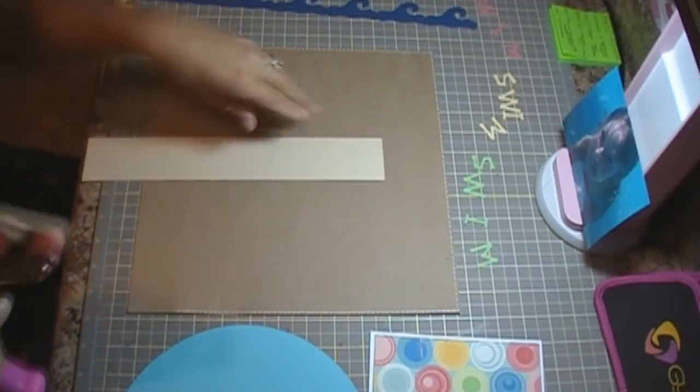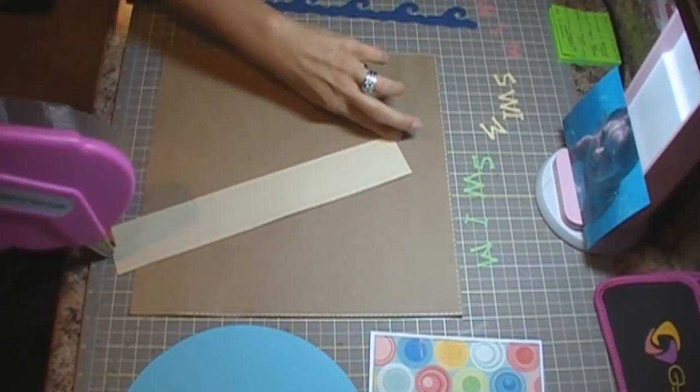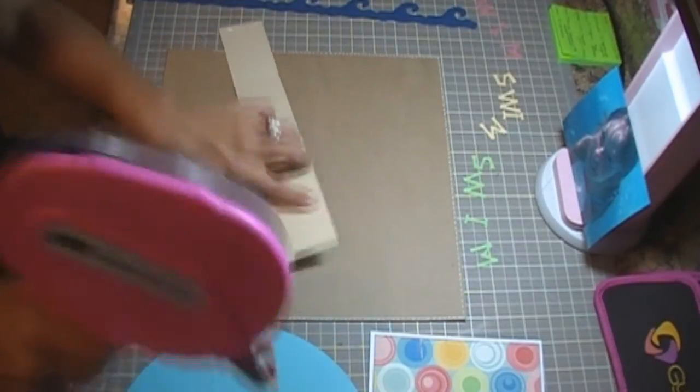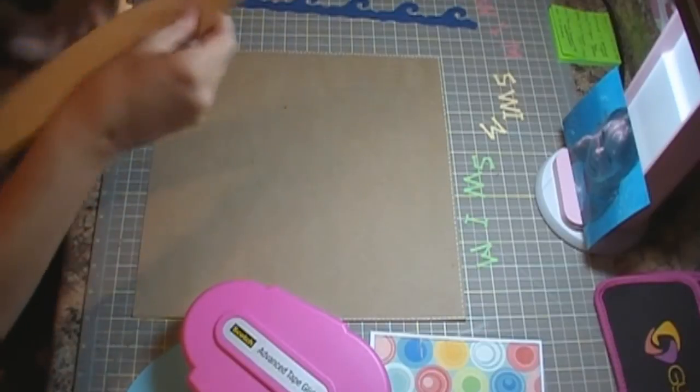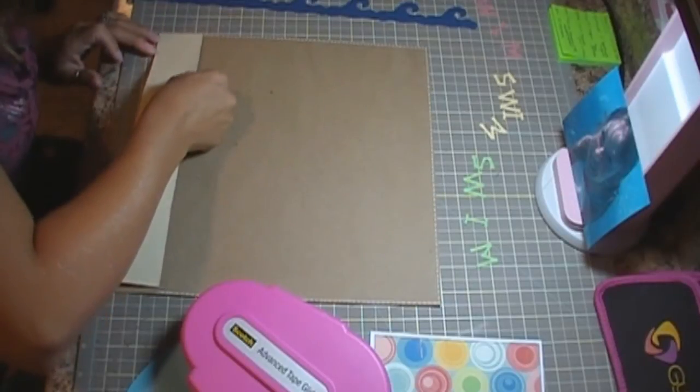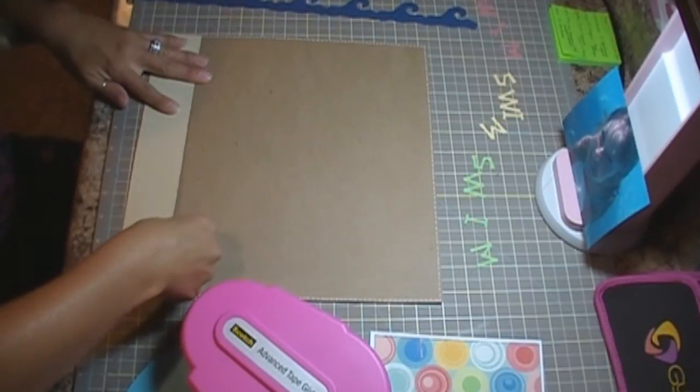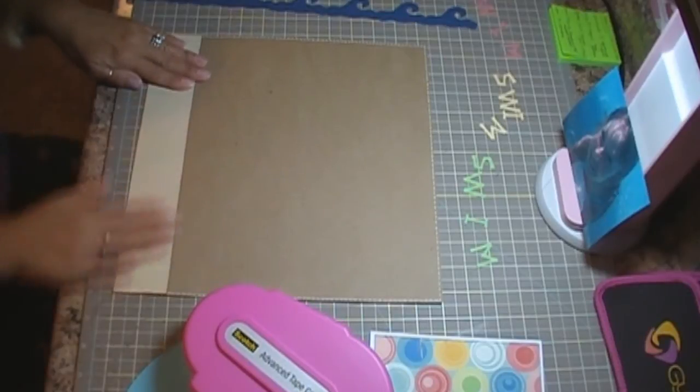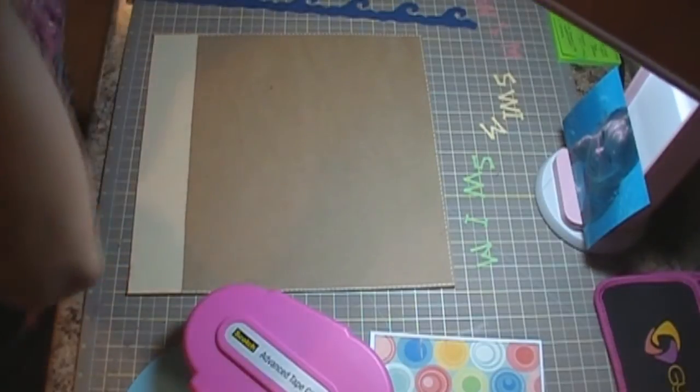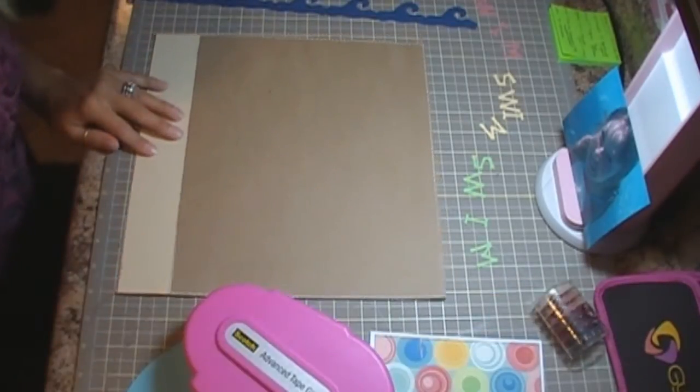So, what we're going to do is we're going to go ahead and get started. I'm going to go ahead and put this layer on there, and this layer is 2 inches by 12 inches. This is going to act as my sand for my layout. I did go ahead and ink around the edges using the Colorbox Cat's Eye Talk ink.